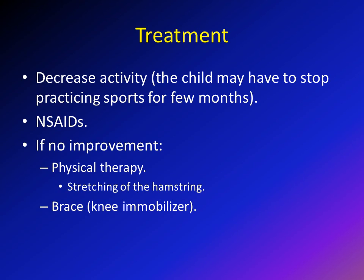The treatment for Osgood-Schlatter disease starts with decreased activity — this is the most important first step. You may need to tell the child to stop or reduce activity for a few months until they improve. Non-steroidal anti-inflammatory drugs help improve symptoms and decrease inflammation. If these two measures don't result in improvement, refer the child for physical therapy for hamstring stretching, since one theory is that tight hamstrings cause the quadriceps to pull too hard through the patellar tendon, causing inflammation. Knee immobilizers or braces can also decrease range of motion.